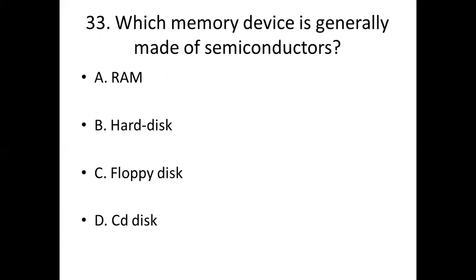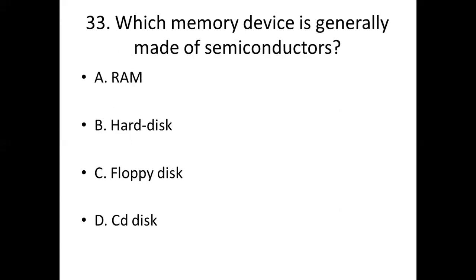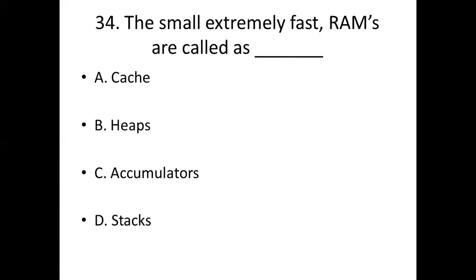Thirty-third bit: Which memory device is generally made of semiconductors? Option A: RAM. Option B: Hard disk. Option C: Floppy disk. Option D: CD Disk. Answer: Option A, RAM.